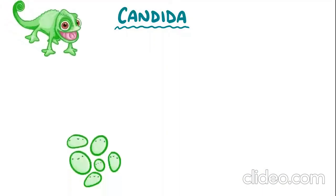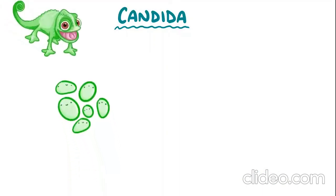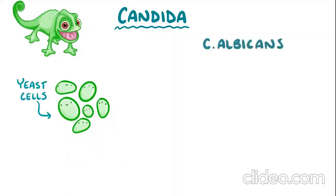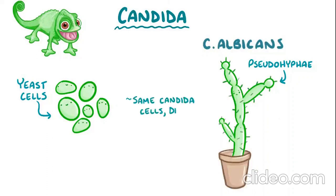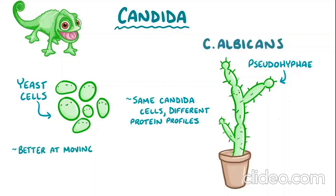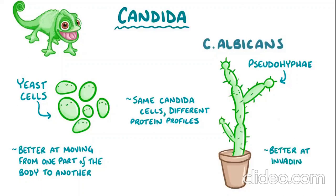Candida can exist in multiple forms — it is kind of like a chameleon. All Candida species can take on a round or oval shape, called yeast cells. Candida albicans can also appear as pseudohyphae, resembling long thin filaments, like a segmented cactus plant. These two shapes express different protein profiles and give the cells different properties. In yeast mode, Candida is better at moving through the body; in filamentous mode, it is better at invading tissues.